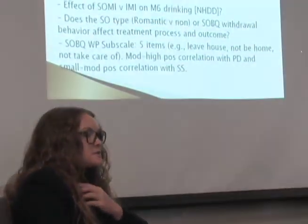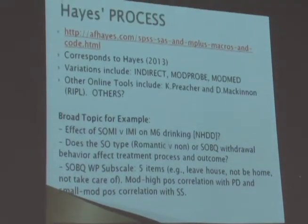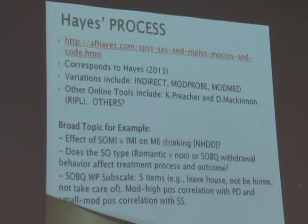Other recommended tools: the Preacher quant-sci site where you can test moderation and three-way interactions in multilevel models. McKinnon's RIPPLE macro site, and David Kenny's site for good conceptual information. A macro is essentially an automated statistical routine — you download it, run it to activate it, and then use a macro call specifying your variables. It's really just turning it on and running it.